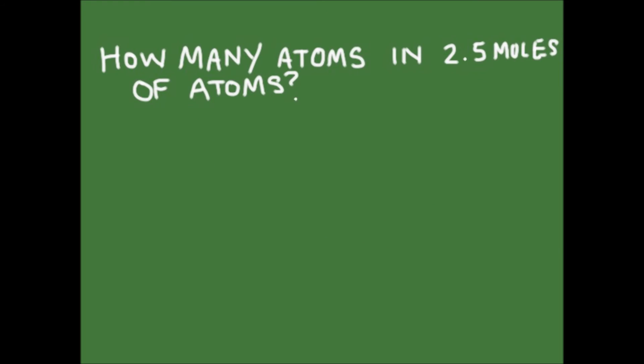How many atoms are there in 2.5 moles of atoms? We're going to apply the same method we use when thinking about eggs. I know that there are 6.02 times 10 to the 23 things in a mole. In this case, those things are atoms.